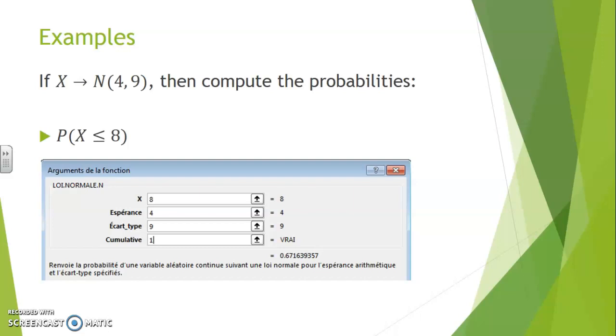Or in French, loi normale. You will have to specify the value of X as well as the expected value and the standard deviation. And mentioning that this computation is cumulative will provide you with the area that is to the left of 8. As you can tell, 67.2% is the result for this particular example.